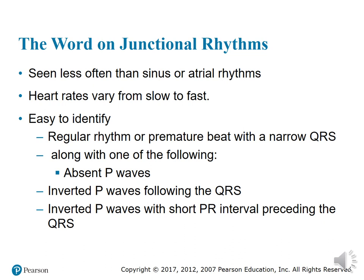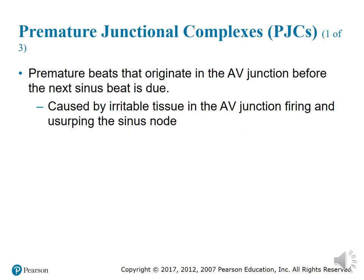Junctional rhythms are seen less frequently than sinus or atrial rhythms, and heart rates vary from slow to fast. They are easy to identify because the P wave is either absent, inverted, or preceding the QRS. The rhythms covered include premature junctional complexes (PJCs), junctional bradycardia, junctional rhythms, accelerated junctional rhythms, and junctional tachycardia.